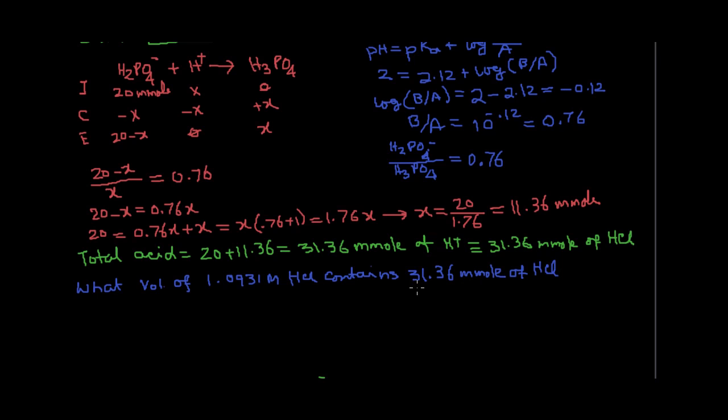As you can see, 31.36 millimole is equal to, divide that by 1,000, so it becomes 0.03136 mol. Not millimole anymore, because I am dividing the millimole. If you multiply mole with 1,000, you get the millimole.